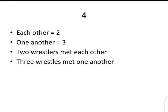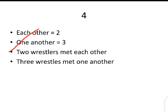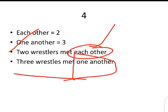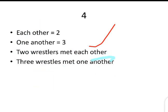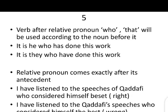Rule number four: 'each other' is used for two entities, and 'one another' is used for three or more entities. When two entities are being referred to, 'each other' is used. For three, four, five, or more entities, 'one another' is used. For example: 'Two wrestlers met each other' — because there are two, 'each other' is used.